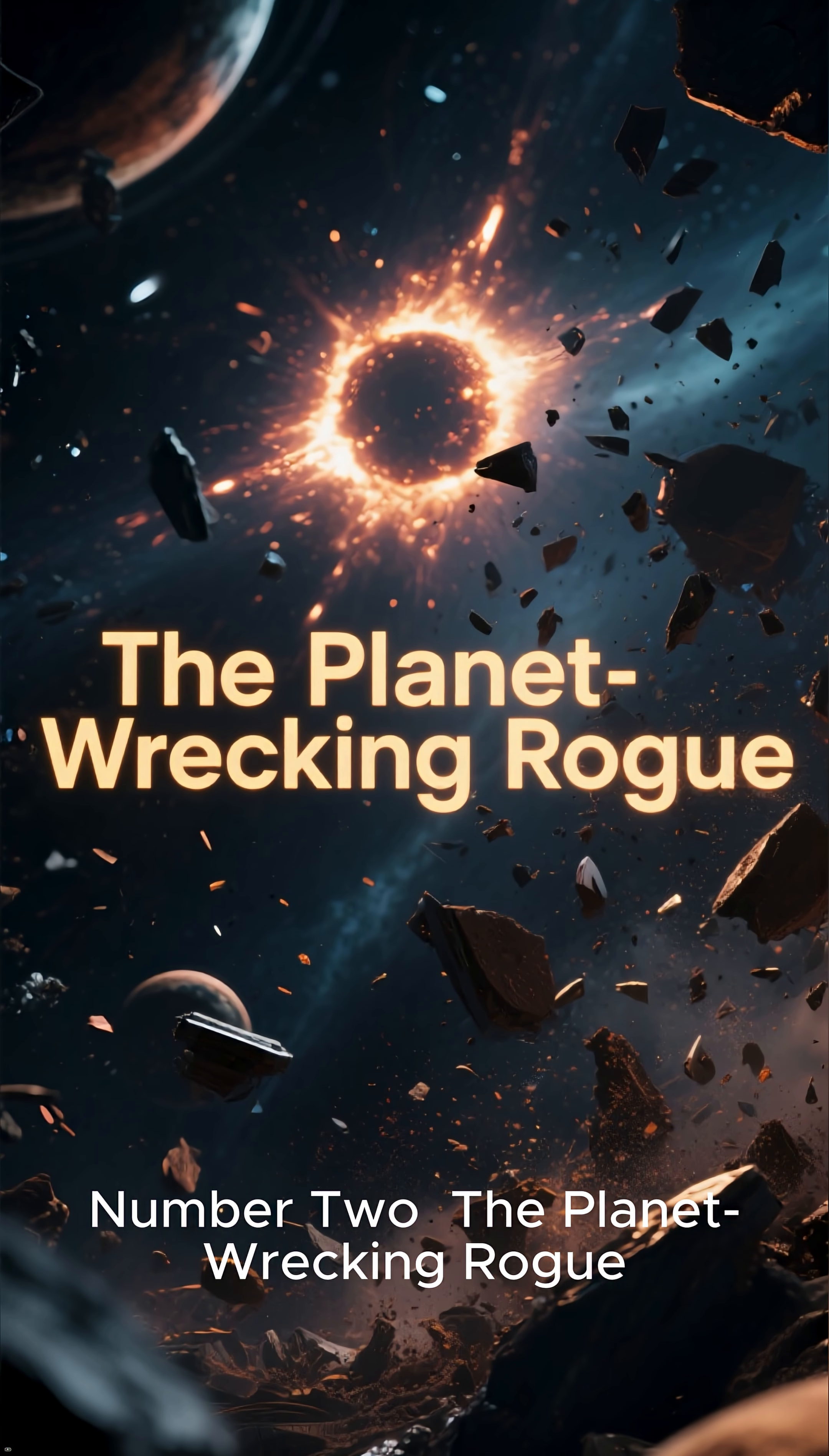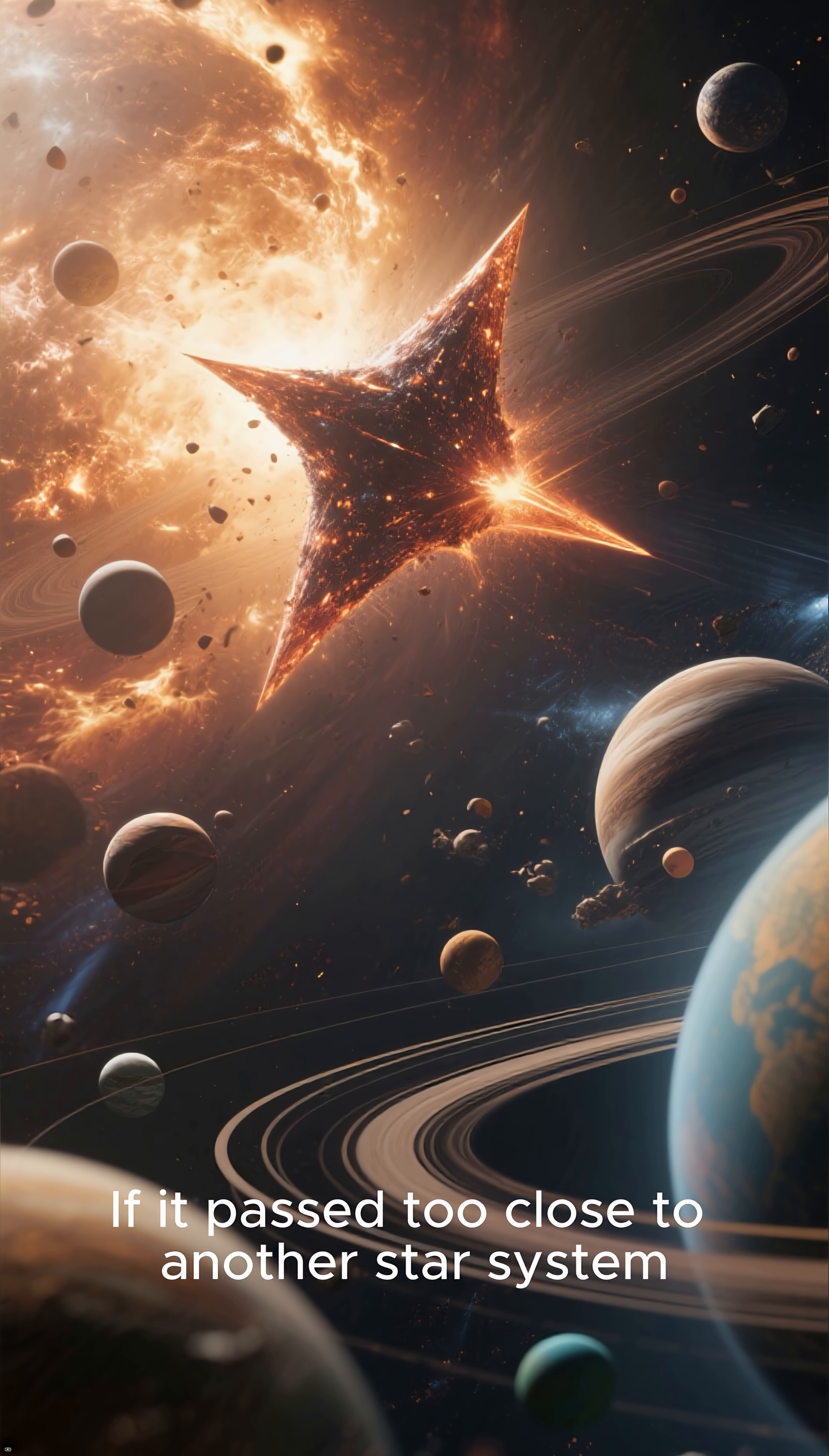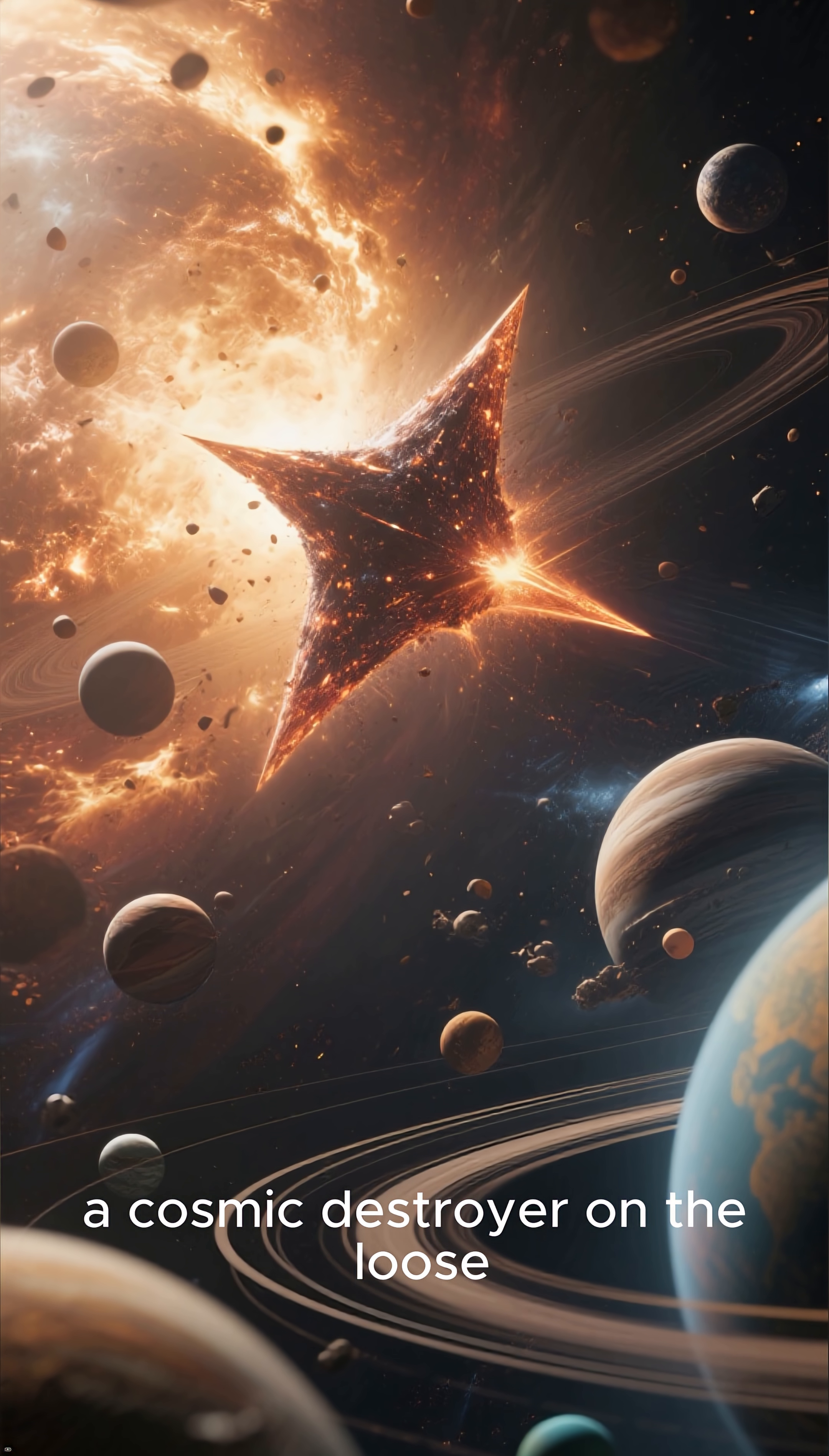Number two: the planet-wrecking rogue. This rogue star is not just traveling fast—it's believed to have once harbored planets. If it passed too close to another star system, its immense gravity could wreak havoc, tearing planets from their orbits or even flinging them into interstellar space alongside it. A cosmic destroyer on the loose.